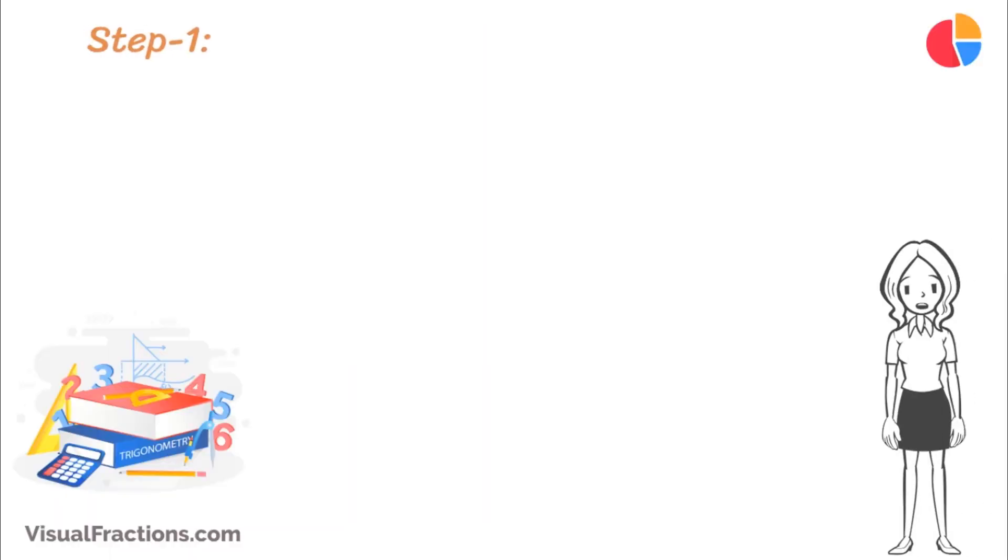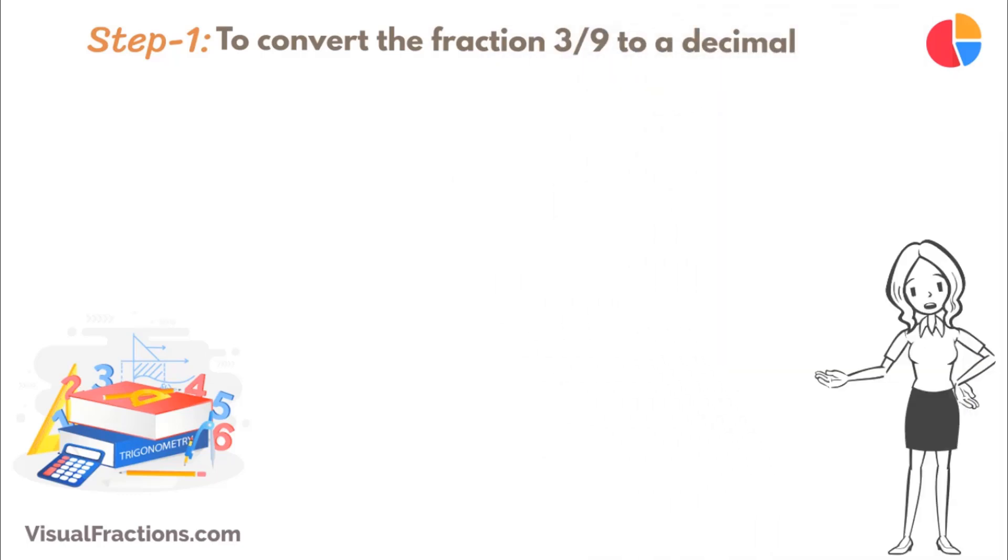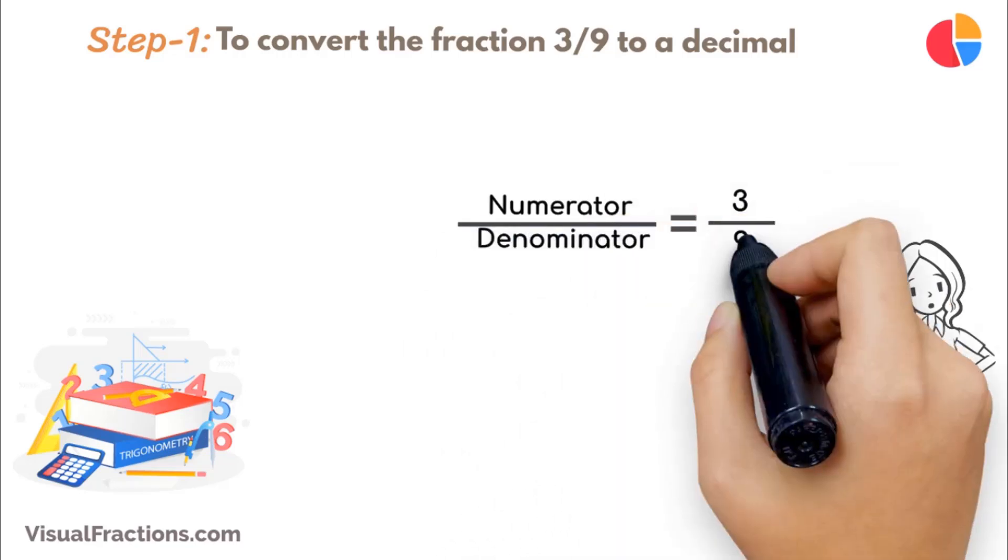The first step in converting the fraction 3 ninths to a percent is to convert this fraction to a decimal. We do this by dividing the numerator, the top number, which is 3, by the denominator, the bottom number, which is 9.